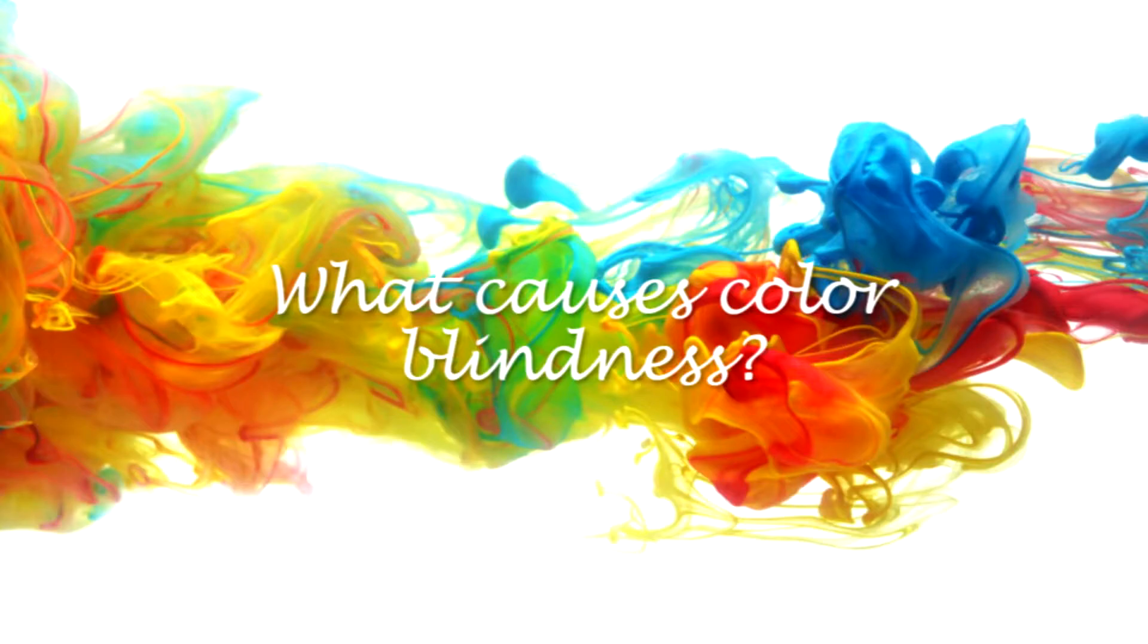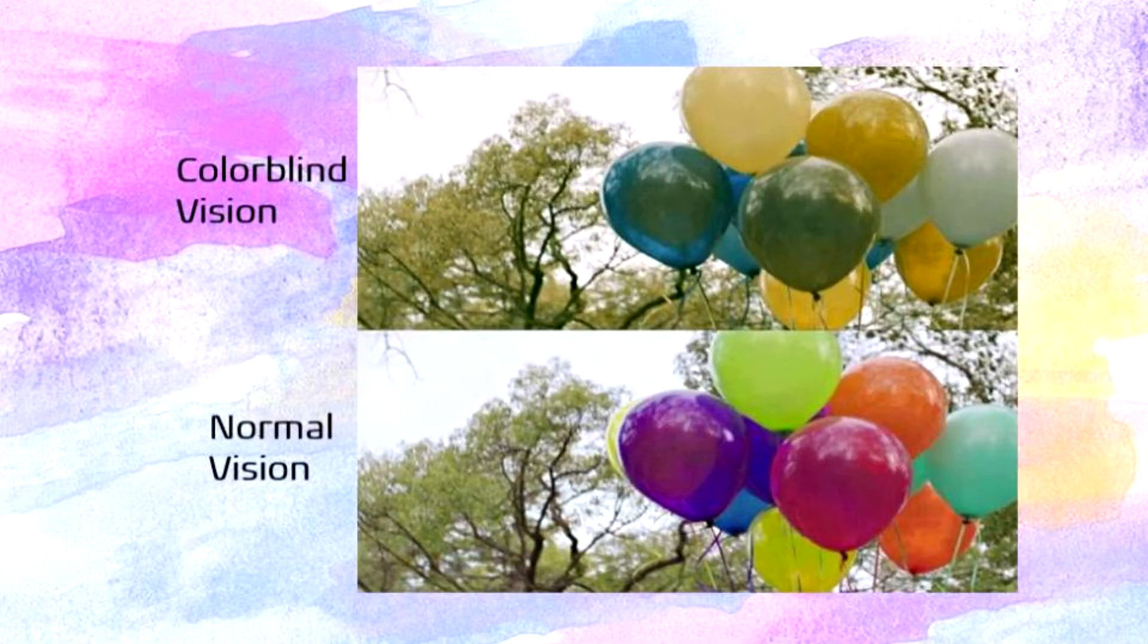So, what exactly is colorblindness? Who does it affect? How do you get it? Well, colorblindness is a condition that causes you to see less colors on the color spectrum than a person with normal vision would.